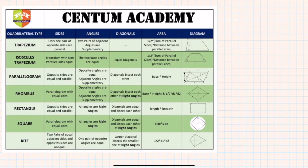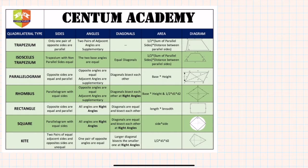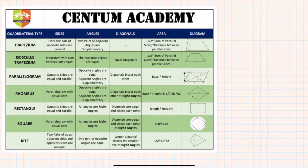My recommendation is to keep this slide in front of you whenever you are solving problems, so that whenever you require any particular information about a quadrilateral type, you can fetch it easily. After about 10 problems on one particular type, all the properties will be memorized automatically. You don't need to deliberately memorize them — the best way is to solve as many problems as possible.